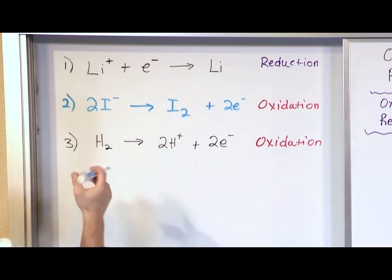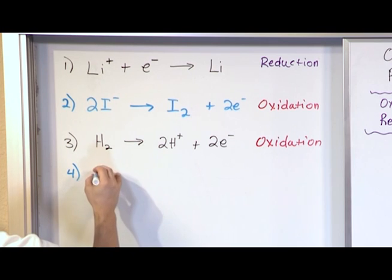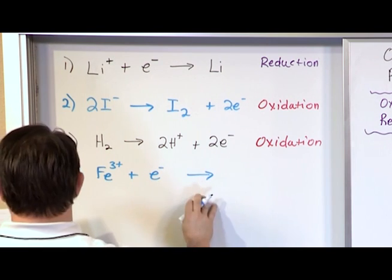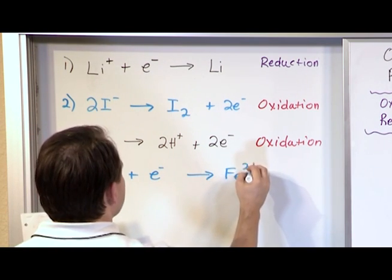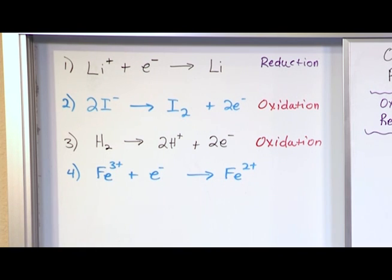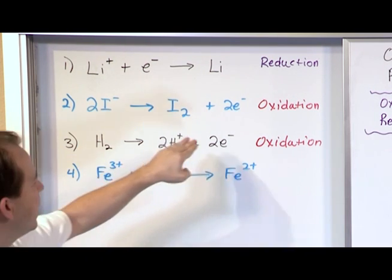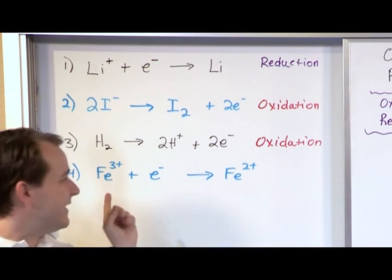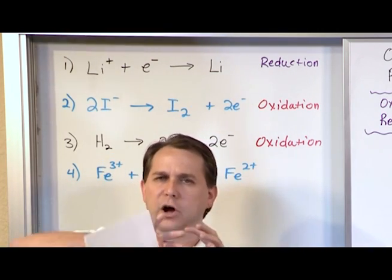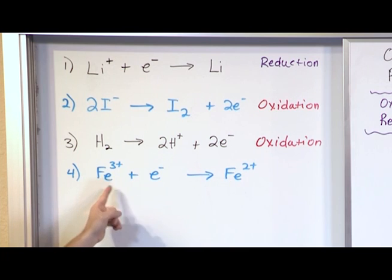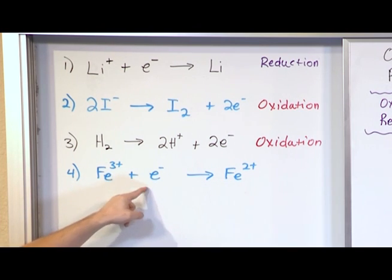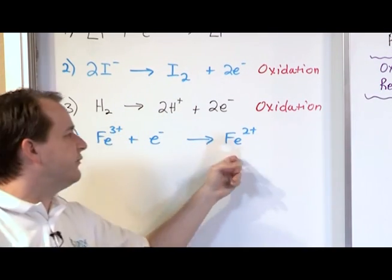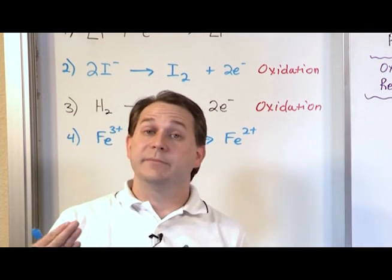And then finally, let's say we have something like iron with a charge of positive three plus an electron gives us iron with a charge of positive two. Is this oxidation or is this reduction? This is a little different because we're starting with an ion and we're ending with an ion. But notice what's happening. This has a charge of positive three. This means that in this state, iron, which is a neutral atom, has already lost three electrons. That's why it's positive three. So we gain an electron here and when we do that, we change the charge from plus three to plus two because we have one more negative charge in there and that's going to change the net charge on this guy back up to plus two.